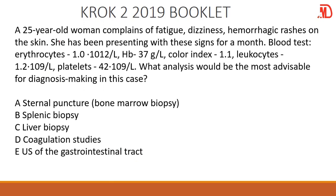So we have a 25-year-old woman complaining of fatigue, dizziness, and hemorrhagic rash on the skin, which occurred a month ago. In the blood, erythrocytes are below normal — extremely below normal. Almost all the findings in the blood are low, which means that this patient could be developing pancytopenia, which occurs when all blood components are low. So how do we go about it? We just need to do a bone marrow biopsy. You can only get these things from sternal puncture, around the xiphoid process.